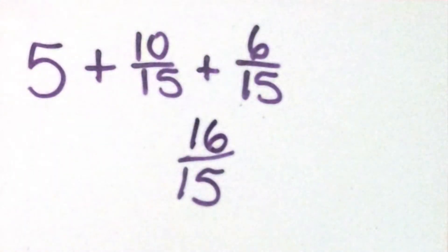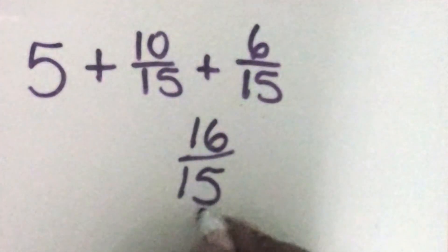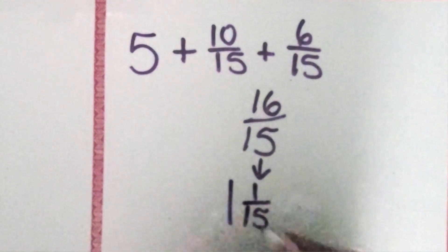We can leave it as 16/15, which is a fraction greater than 1, sometimes called an improper fraction, or we can convert it or rename it as a mixed number. 16/15 can be renamed as 1 1/15.